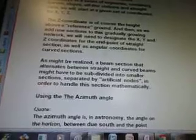Three-dimensional because the terrain usually undulates and the beams have to adapt to that to some extent. Moreover, there must be sloping beams at stops and so forth. To calculate coordinates and angular orientation of curved constant speed guideways in a series of segments containing curved slopes, offline stations, and straight runs, we will start at a given set of coordinates for X, Y, Z. The Z coordinate is of course the height above a reference ground and then as we add new sections to this gradually growing network, we will need to designate the X, Y, and Z coordinates for the endpoint of straight section as well as angular coordinates for curved sections.